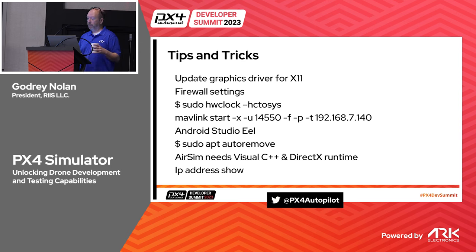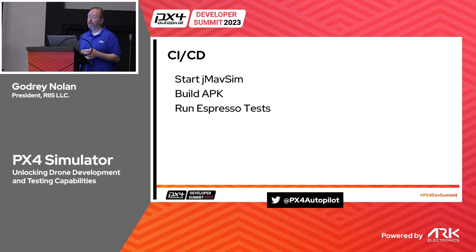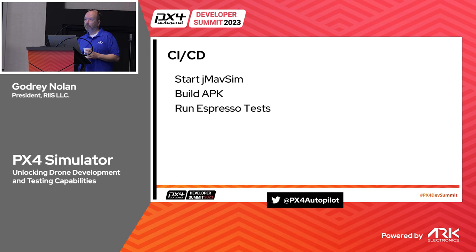Now we have all of our simulators set up. What I want to do is get to a modern mobile development environment - we're running Jenkins here. Pretty easy to set up regardless of what platform you're running on. You just create your app - in this case it's simple Android. We have three steps: we want to start jmavsim before we do the build, we want to build the APK, and then we want to run the Espresso tests. There are a couple of hoops to run through for jmavsim because I installed Jenkins on the Windows side. You could install it within WSL which might make more sense, but I was already started so I continued anyway.